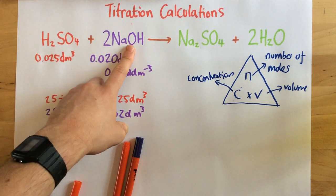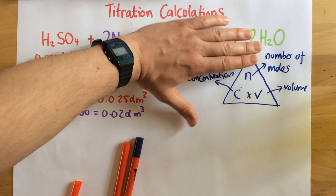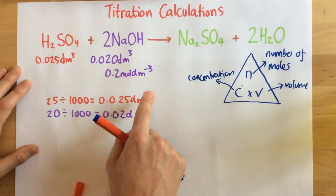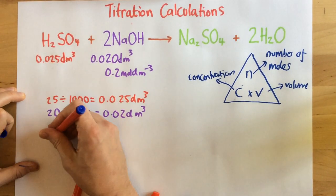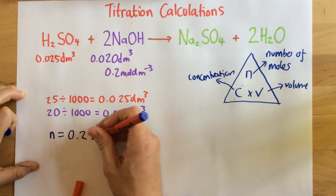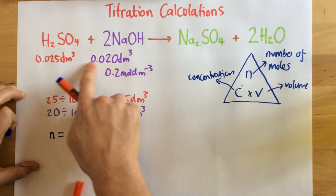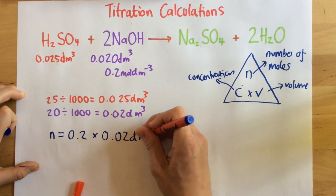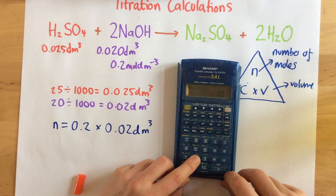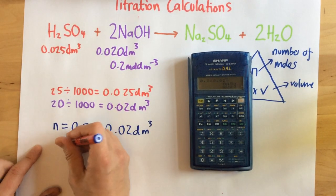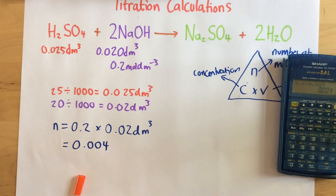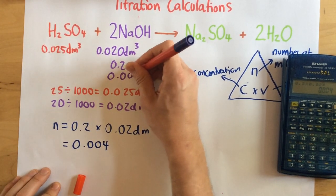First I need to find the number of moles of my sodium hydroxide. To do that I cover up N in the triangle, so I need concentration times volume. My concentration is 0.2 mol/dm³ and my volume is 0.02 dm³. So 0.2 × 0.02 = 0.004. That's the number of moles of sodium hydroxide, and I'll add that information: 0.004 mol.